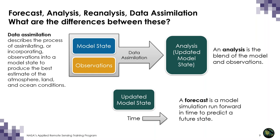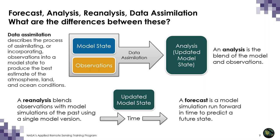Starting from our best estimate of current conditions, a simulation is run forward in time to predict a future state. In the GEOS forecast system, data assimilation techniques, the underlying forecast model itself, and the observations are constantly improving. A reanalysis uses data assimilation to blend a forecast model simulation of the past with past satellite observations, using a consistent data assimilation technique and a single model version to produce a long-term dataset.